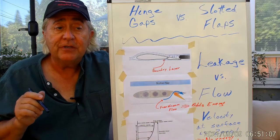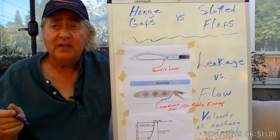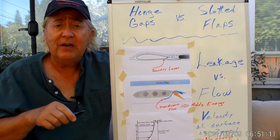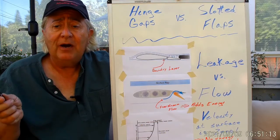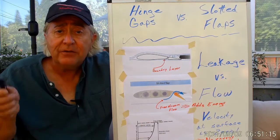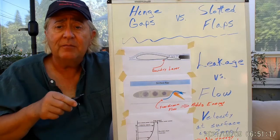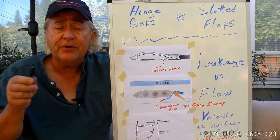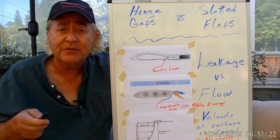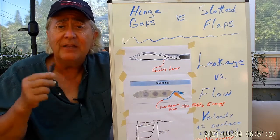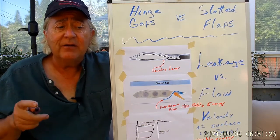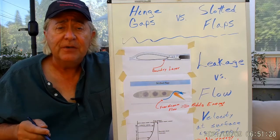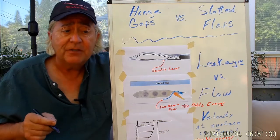Some very astute viewers wrote in and said, hey wait, I thought when you let air go through the gap on a slotted flap it actually increases your lift. How come this flow through your gap is worse? It comes in flow separation and extra drag and the elevon is not working. I don't understand. What's the difference between the two? And it's an excellent question. Why are they different?